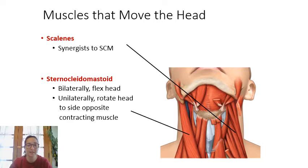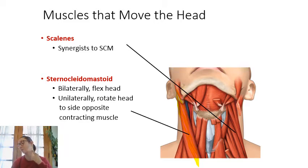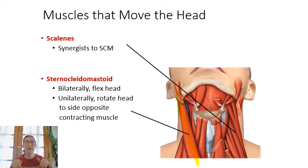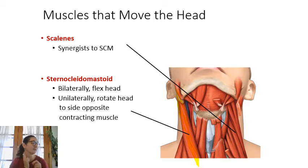In the neck, sternocleidomastoid is a large muscle — you can see it when you turn your head. It runs from the mastoid process of the temporal bone, past the clavicle, down to the sternum. You have one on each side. If you contract both at the same time, the head flexes downward. If you contract just one side, it turns your head toward that direction.